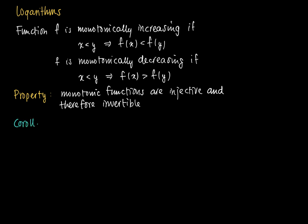As a corollary, as a direct consequence of this property, we've been looking at exponential functions, which take the shape f(x) equals a to the power x. This must be invertible. So for a smaller than 1, I have a monotonically decreasing function, and for a larger than 1, I have a monotonically increasing function.